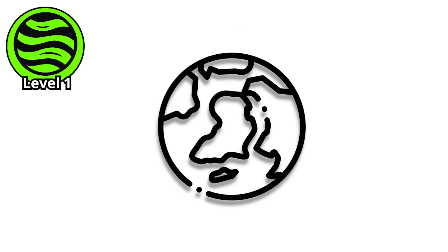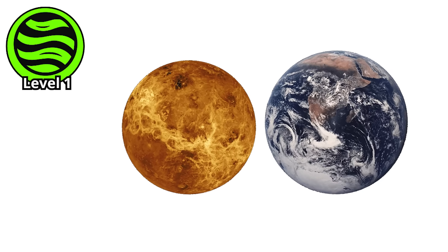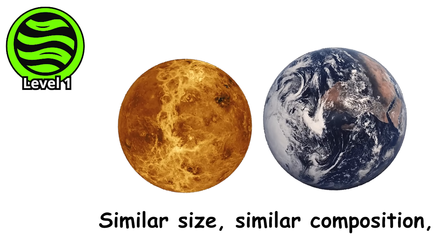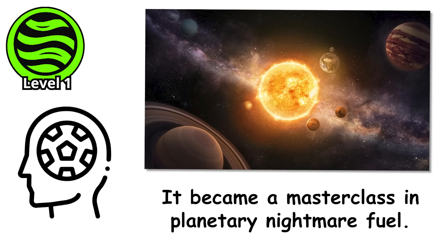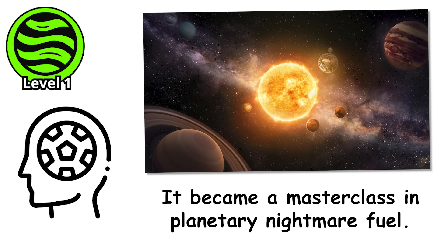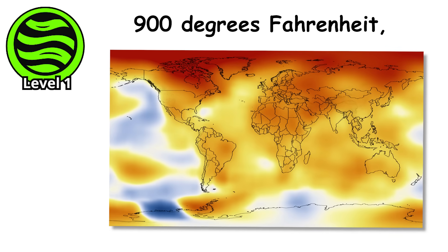Level one. Let's talk about worlds that looked at habitability and said, no thanks. Venus should have been our twin - similar size, similar composition, just one planet closer to the sun. Instead, it became a master class in planetary nightmare fuel. Surface temperature 900 degrees Fahrenheit, hot enough to melt lead.